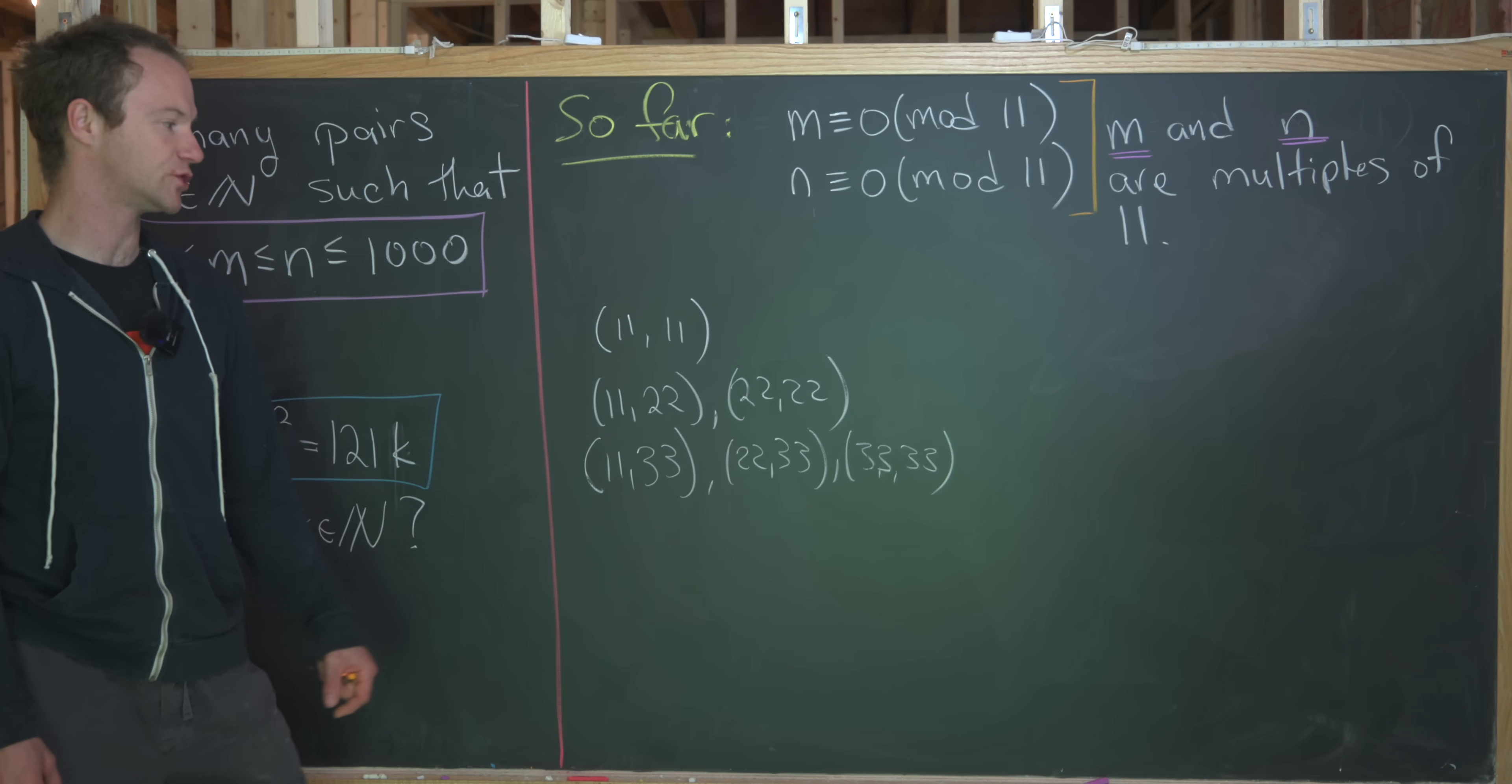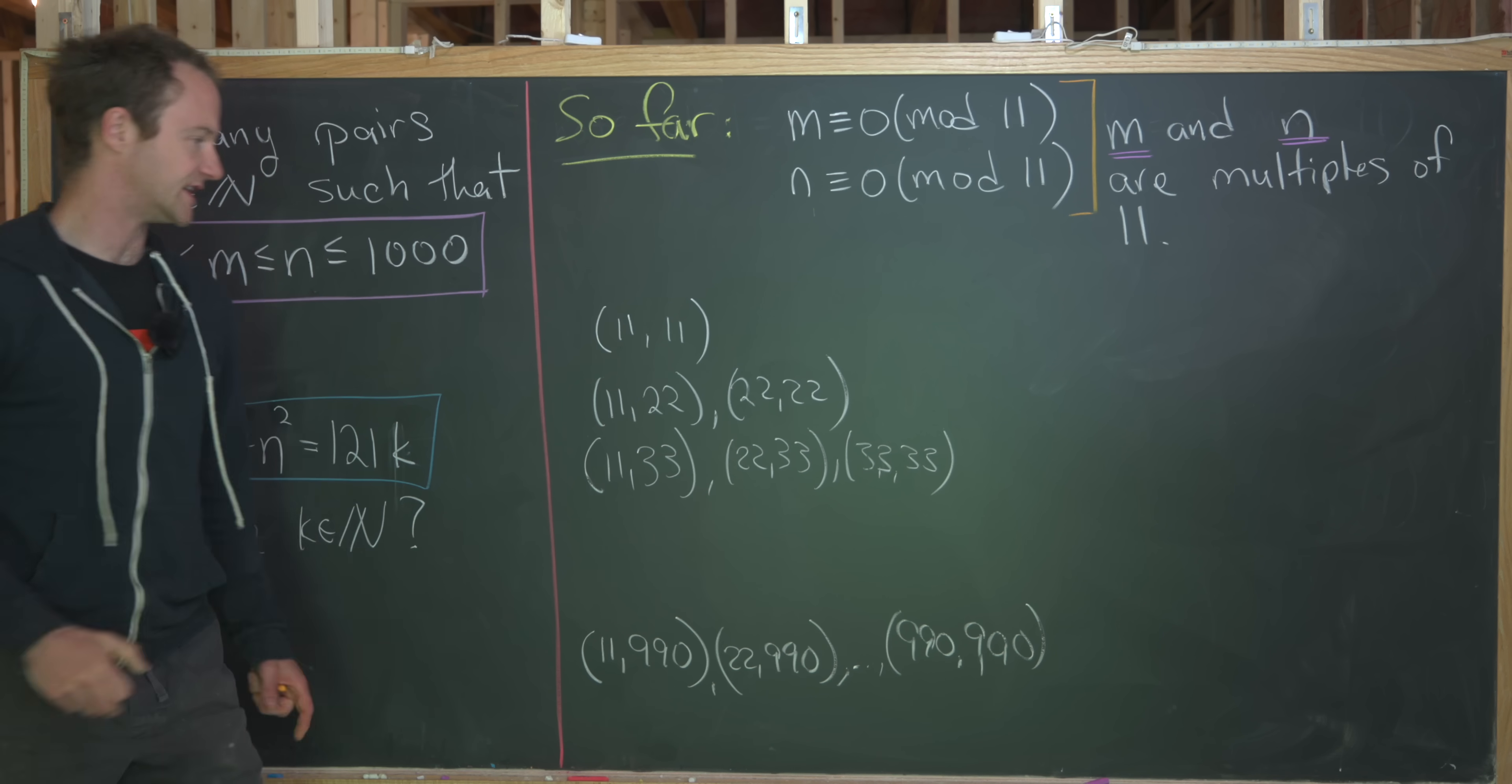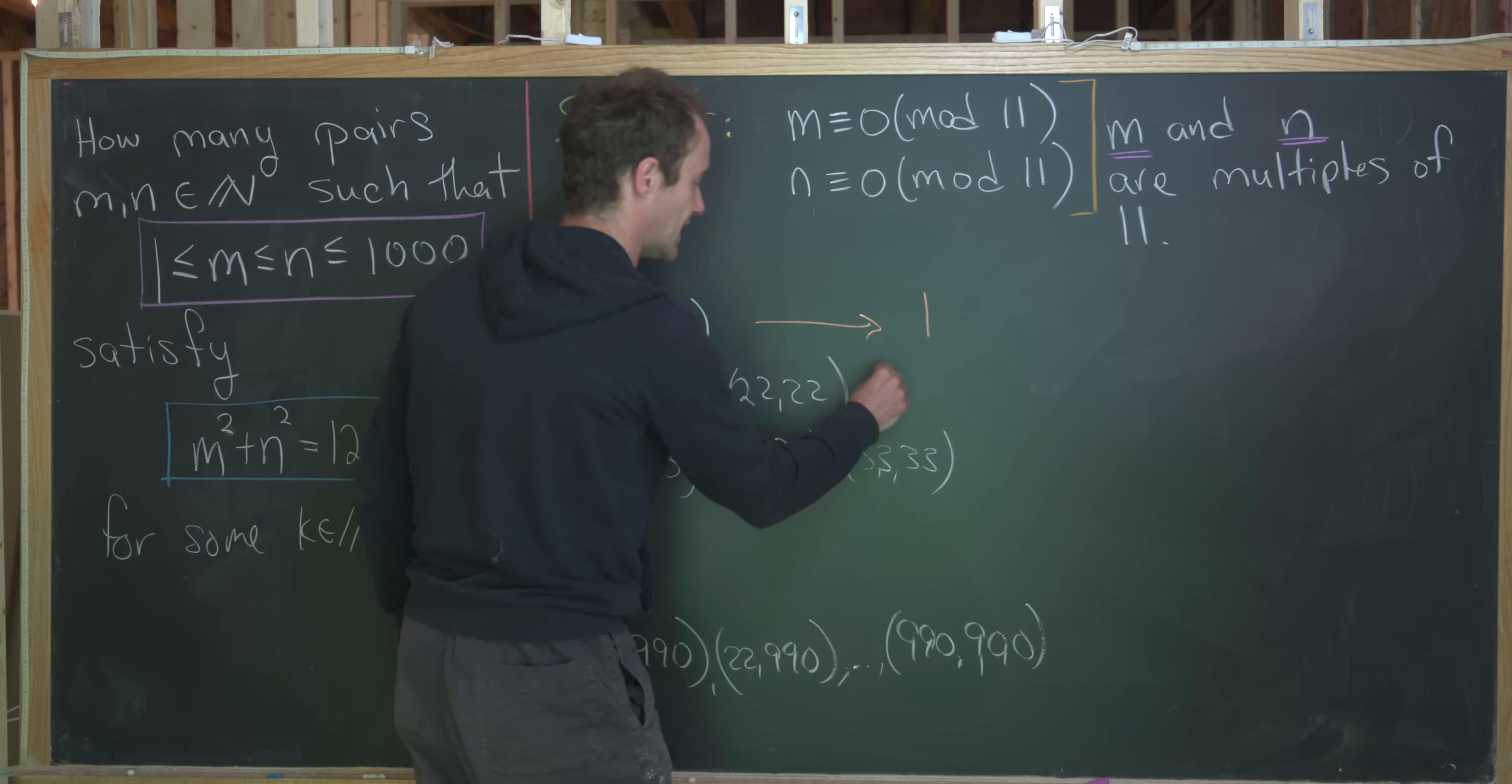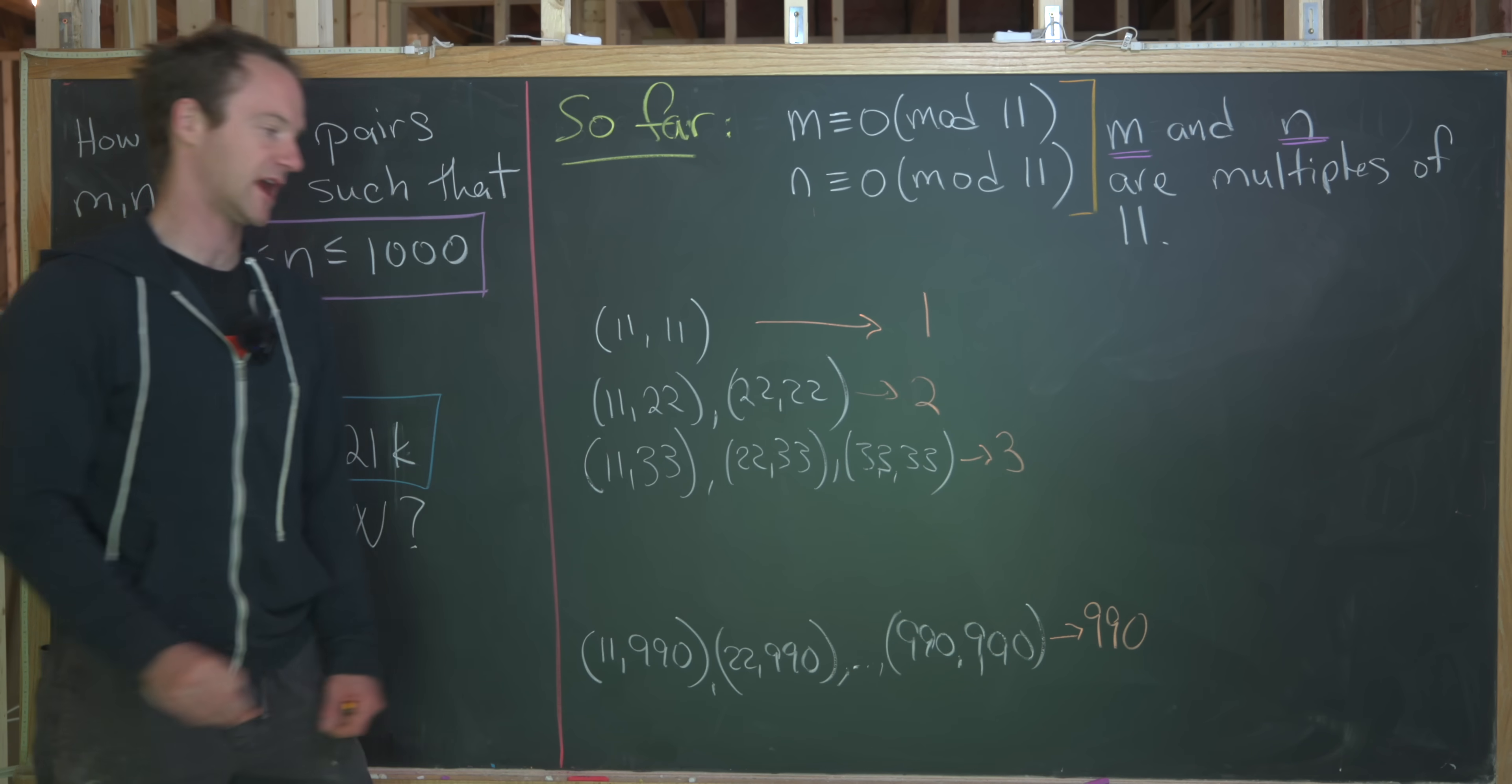Okay, so now let's take that all the way down to our last possibility. And our last possibility will be the closest multiple of 11 to 1000, which is 990. So here we have 11, 990, 22, 990, all the way up to 990, 990. Now the question is, how many elements are on each of these rows? So notice we've got one ordered pair on this row, we have two ordered pairs on this row, we have three ordered pairs on this row, all the way down to here, we have 90 ordered pairs on the final row.